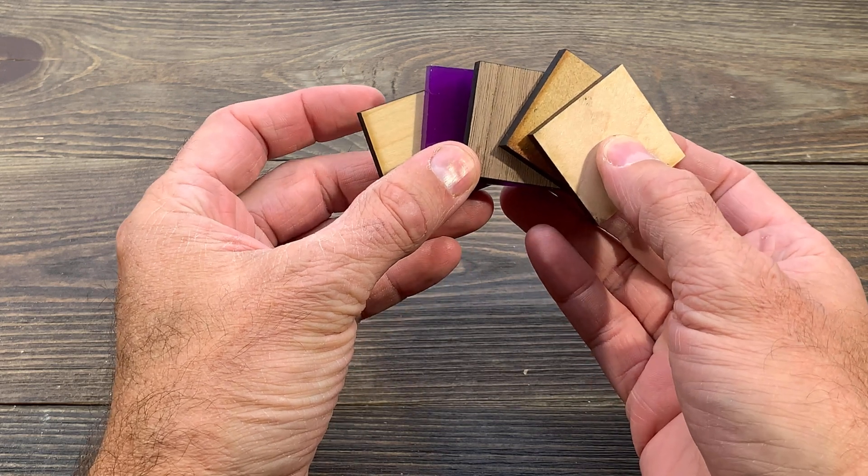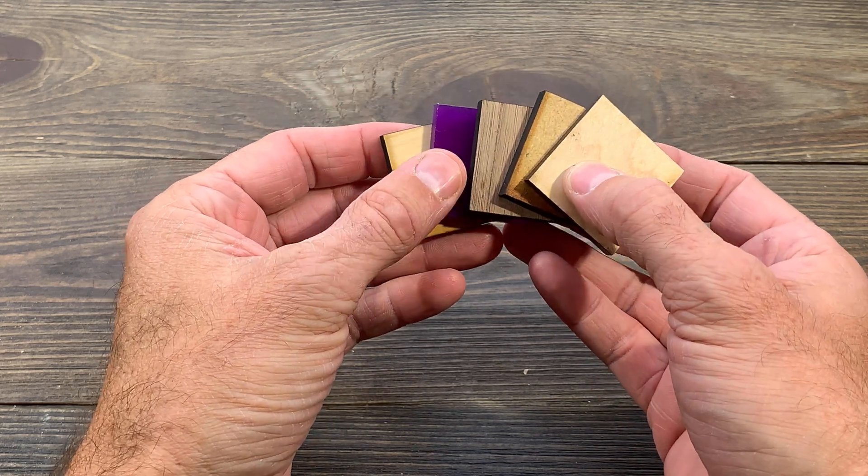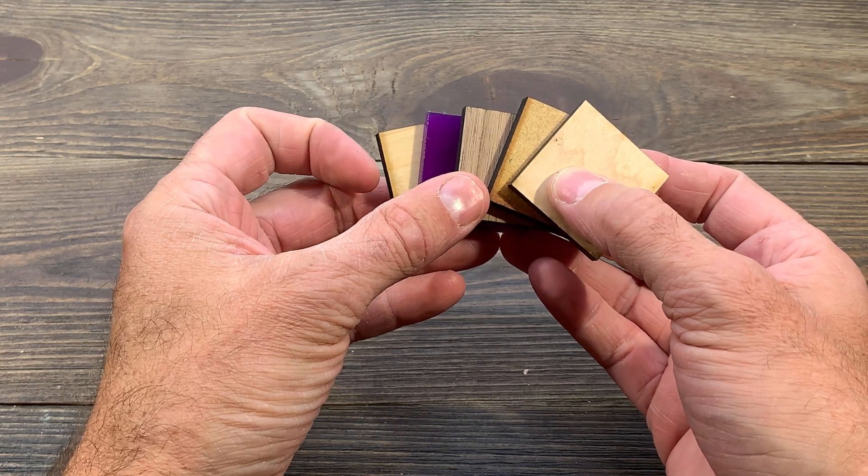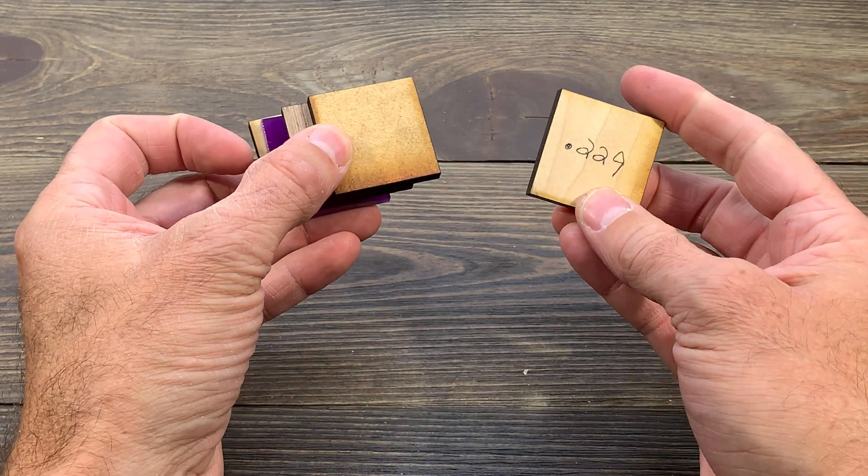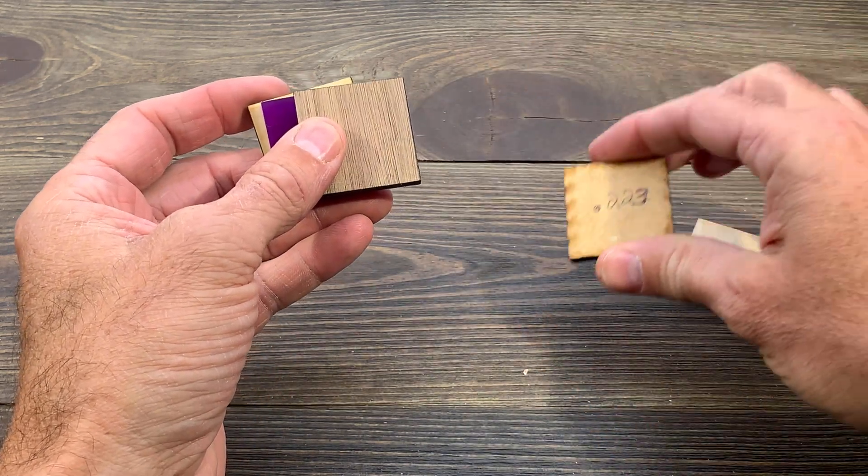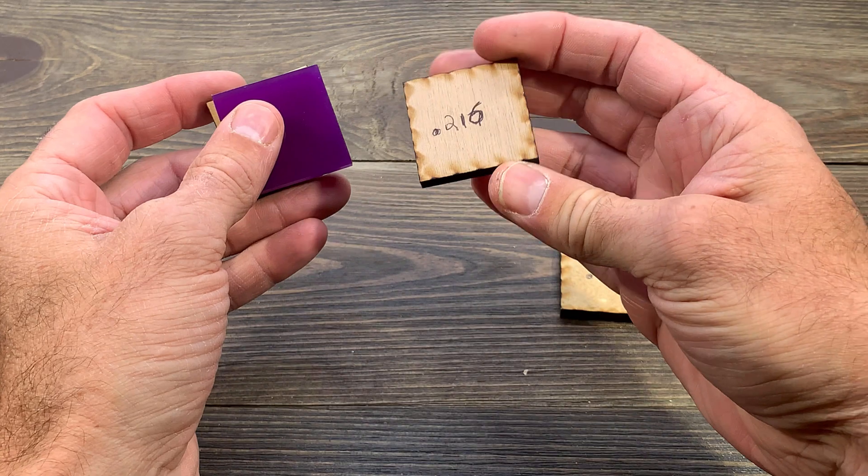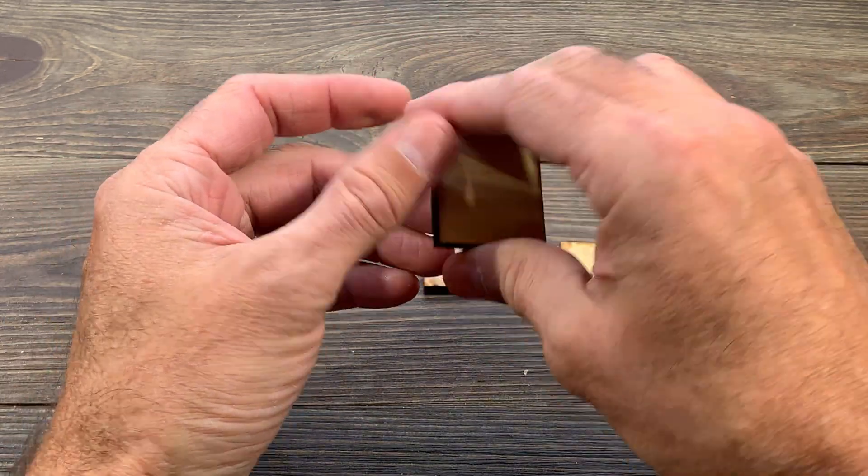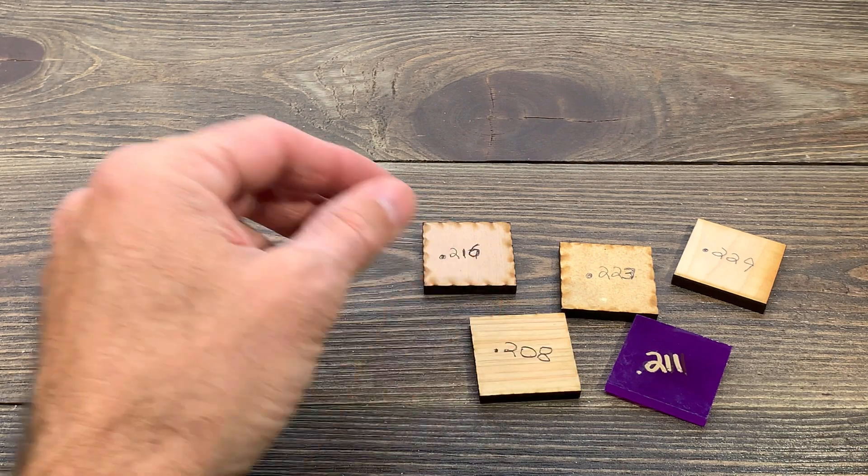These five different materials are materials that I have here in the office, and they were all labeled or sold as quarter-inch material. But check this out. When you measure them, this one's 0.229, 0.223, 0.216, 0.211, and as thin as 0.208.